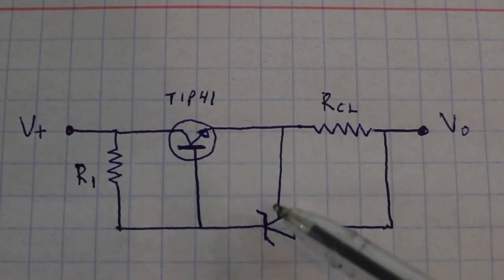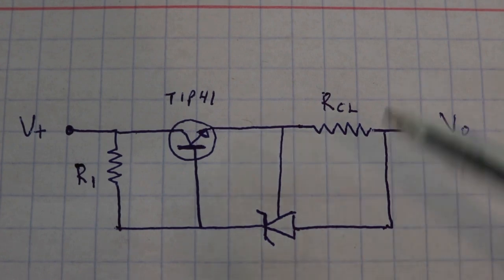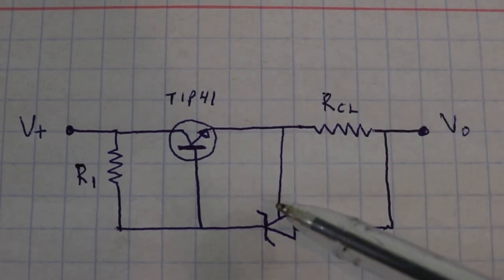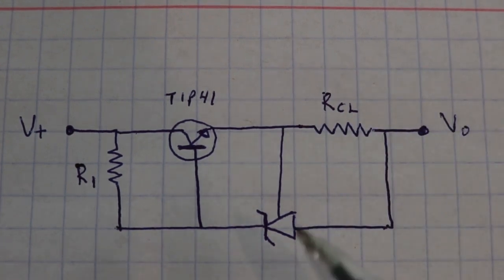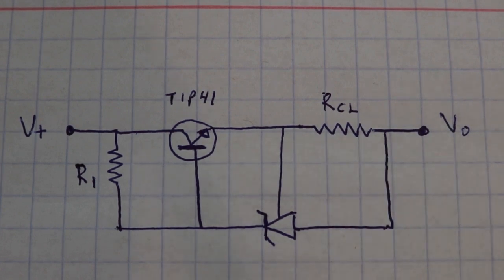Now, the voltage in this pin depends on the current through this resistor. Suppose we have an excess current, then we will have higher voltage here, and then lower voltage here. Less voltage in the base of the transistor will mean less current through the circuit.